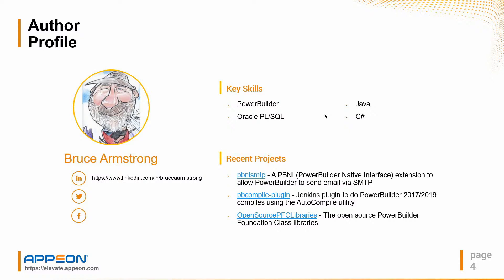In addition to PowerBuilder, I know Oracle, PL/SQL, Java, C#, and a little bit of C++. I've been involved in a number of open source projects, including the open source PFC libraries. I wrote a utility called PB&I SMTP, which is a PowerBuilder native interface extension written in C++ that allows you to send email via SMTP. I also wrote some Jenkins plugins — one in particular uses the auto-compile capability introduced in 2017 and available in 2019 to do command line compiles of your PowerBuilder app, which is useful for continuous integration.